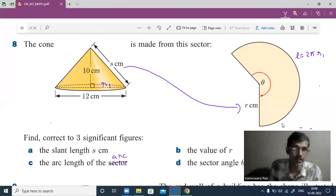To avoid confusion, the radius of the cone is r, and the radius of the sector is s. Now we have to find the slant height to get the radius of the sector.